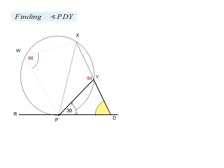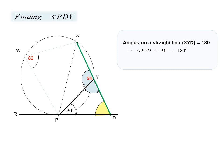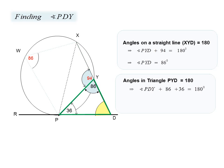Finally, we are asked to find the angle at D, or PDY. We note that because the angle is on a straight line equaling 180 degrees, and XBY equals 94 degrees, this angle is simply the supplementary angle and that is 86 degrees. From our knowledge that angles in a triangle equal 180 degrees, the unknown angle is found as 58 degrees. This is the end of our second example.